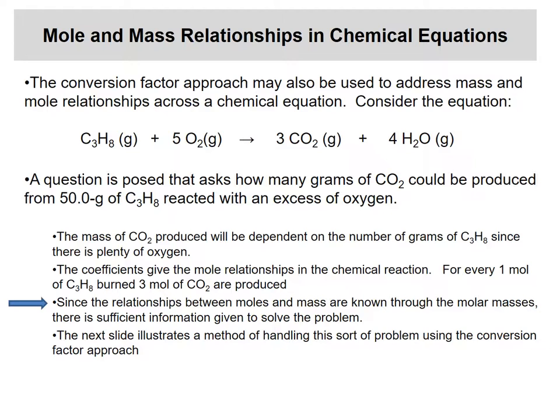So why does this matter? It turns out that moles carry across the chemical equation. If you want to develop a chemical process and make money on it, you need to understand the relationships between how much you start with and how much you end up with. Consider propane — C₃H₈. The balanced equation says one mole of propane reacts with five moles of oxygen to produce three moles of carbon dioxide and four moles of water. Those coefficients give the mole relationships.